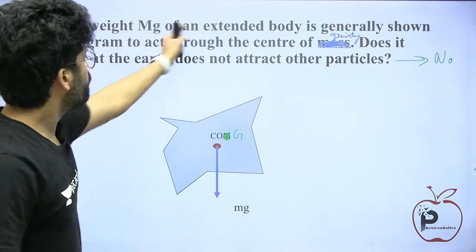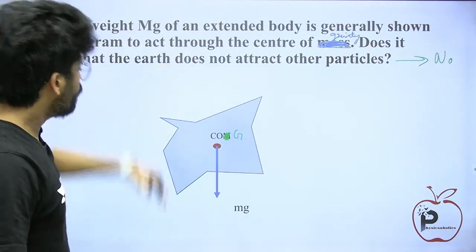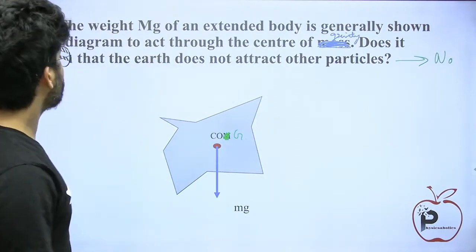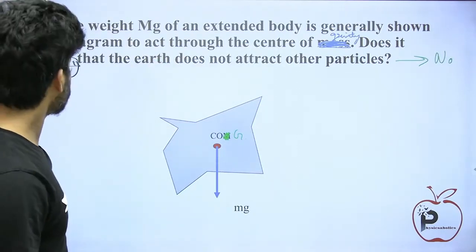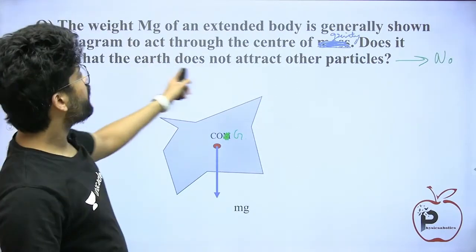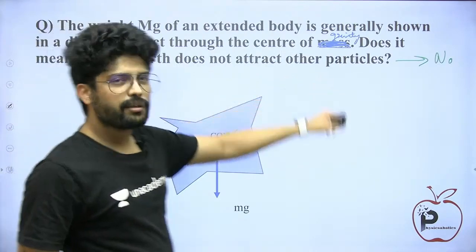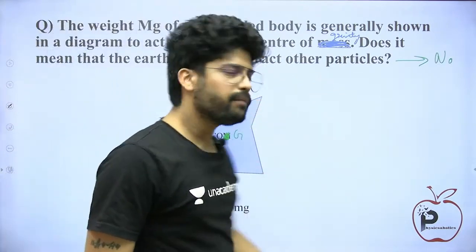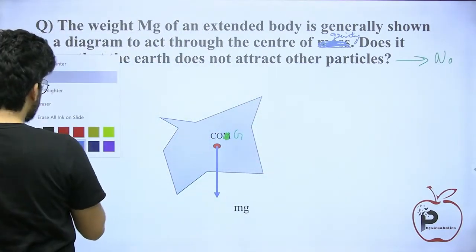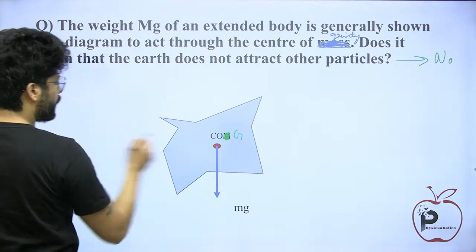The weight mg of an extended body — the question is that the weight is placed at the center of gravity. Is this not the earth? It means that the earth does not attract other particles. What does this mean in reality? These are very small particles.